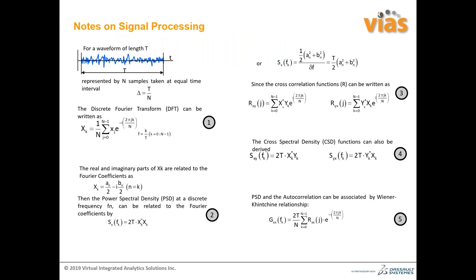A few notes on signal processing: in FE-Safe, there is a signal processing tool. Once you have time domain data, you get the time domain representation. You can convert this time domain data into the frequency domain by using the Discrete Fourier Transform (DFT). The PSD can then be calculated at every discrete frequency by combining the Fourier coefficients. You then find the cross-correlation function and the cross-spectral density, which can be linked by means of the Wiener-Khinchin relationship.